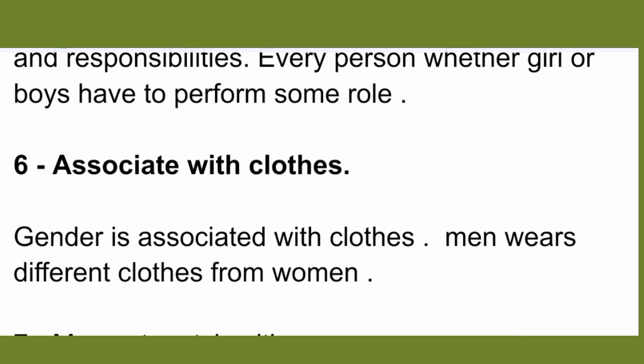The sixth characteristic is that gender is associated with clothes. Men and women wear different types of clothing. Men usually wear t-shirts and jeans, while women have different types of dresses. These differences in clothing also serve to differentiate between men and women.